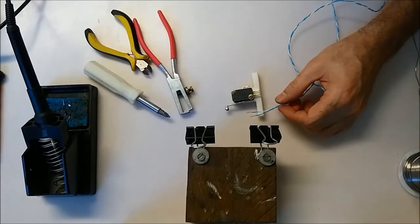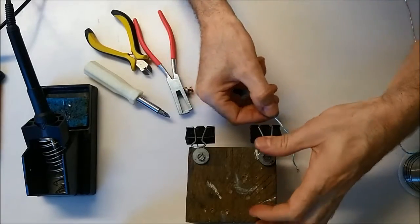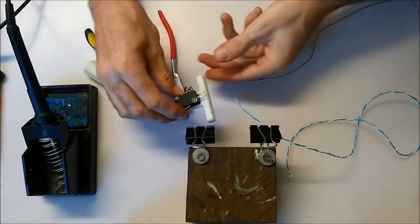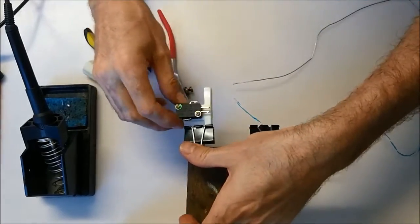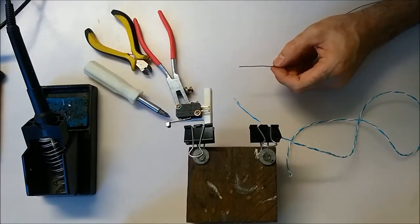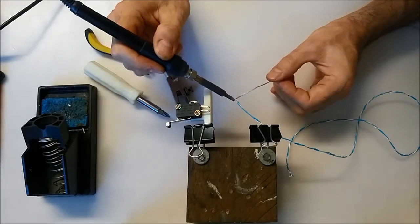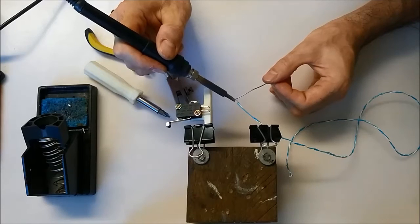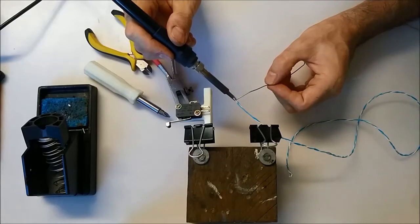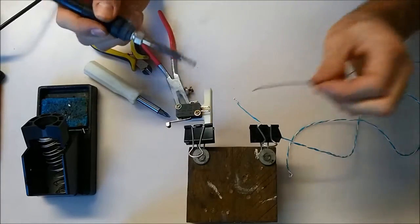So heat up the soldering iron. Actually, we'll just tin our wires first, so just clamp it. Might as well clamp that as well. So just tin your wires, it makes it easier to solder, to put it on.